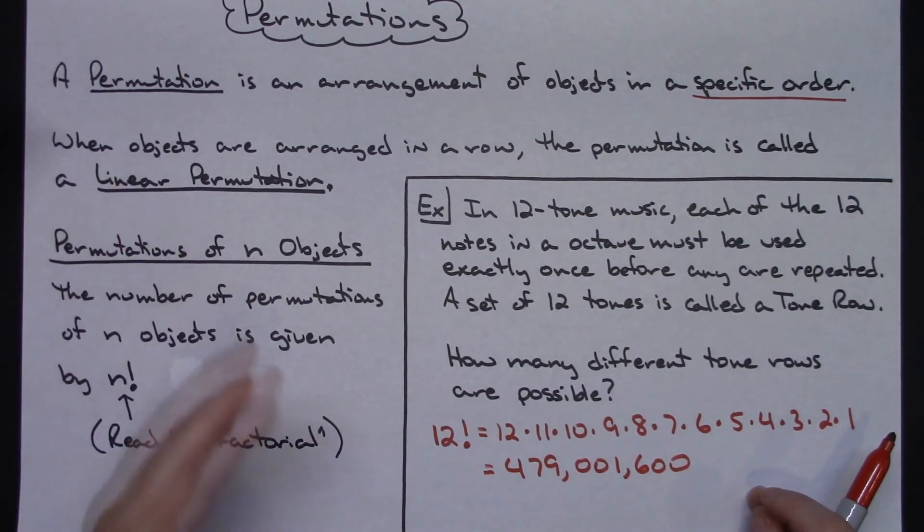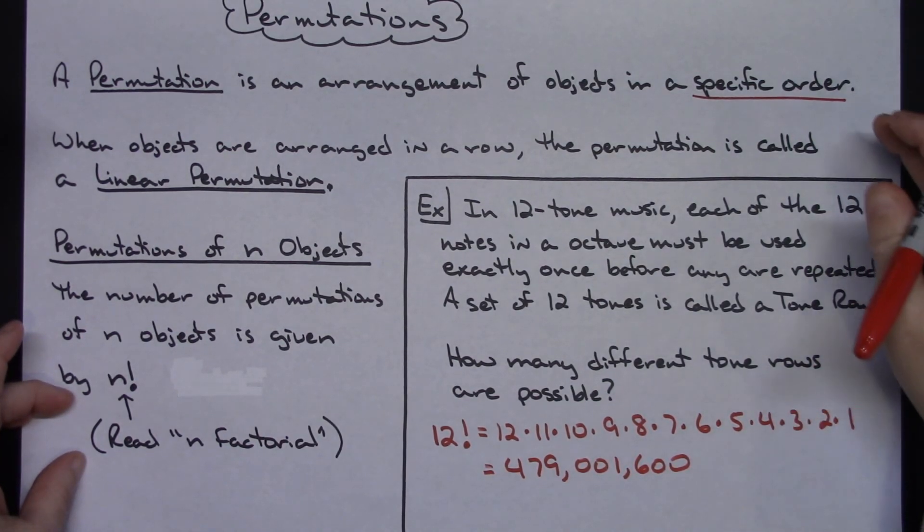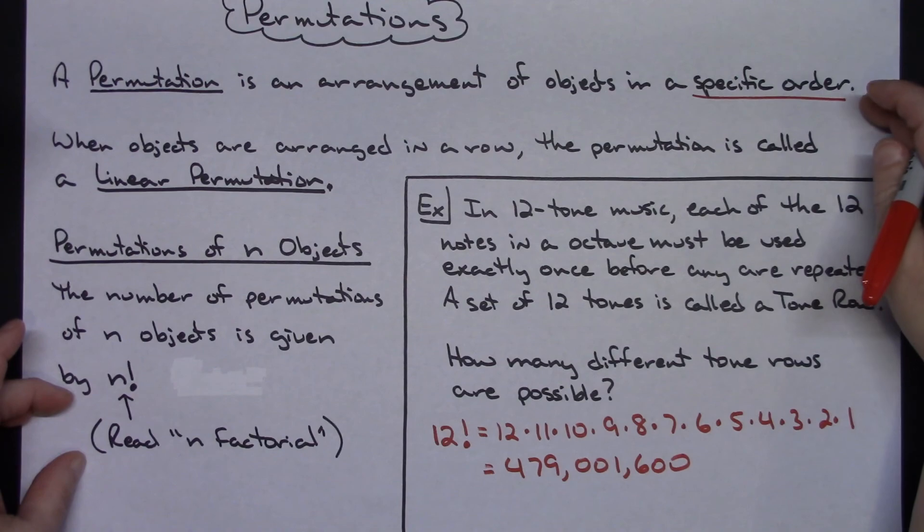Using permutations. So basically just one quick explanation here with one example of what a permutation is, how you calculate it, and the fact that it definitely deals with a specific order.